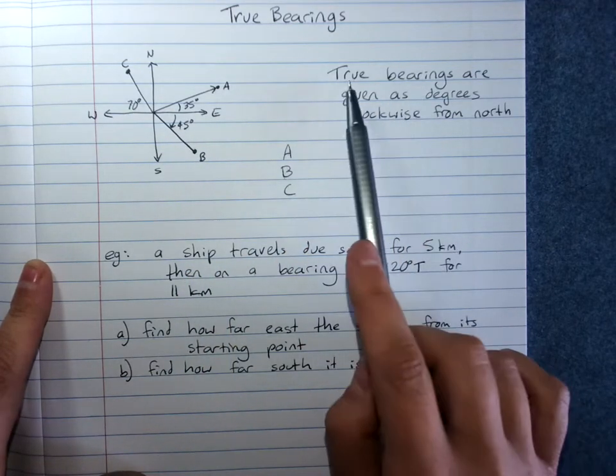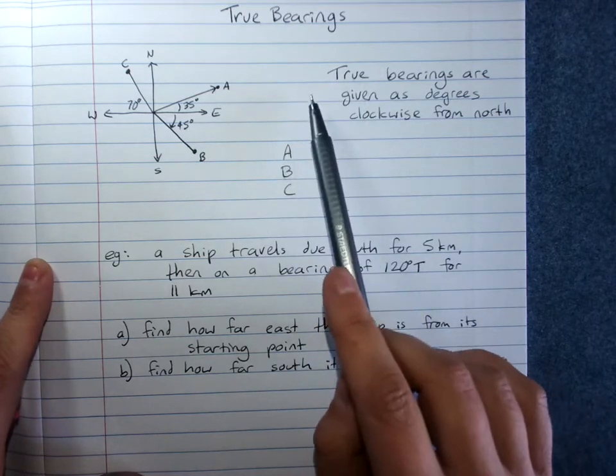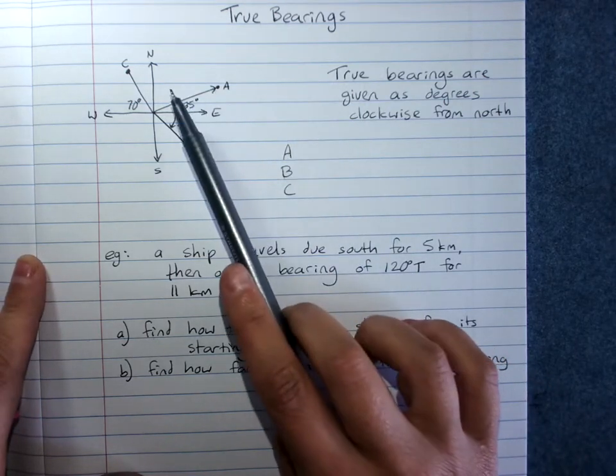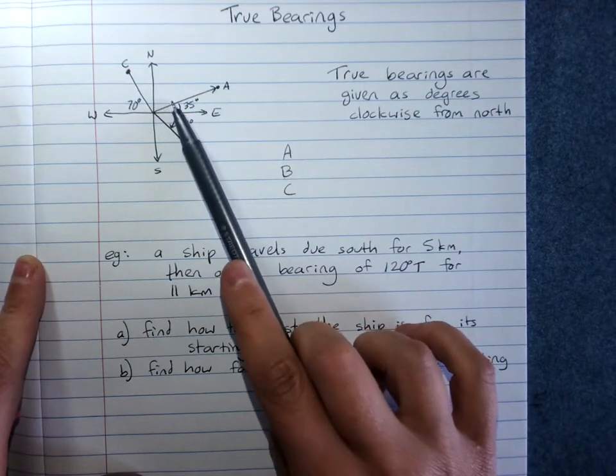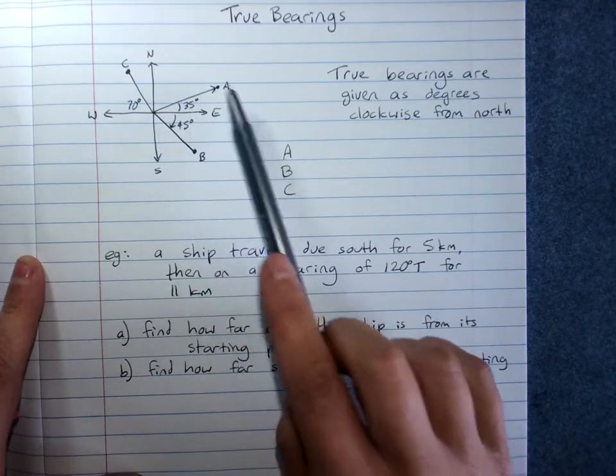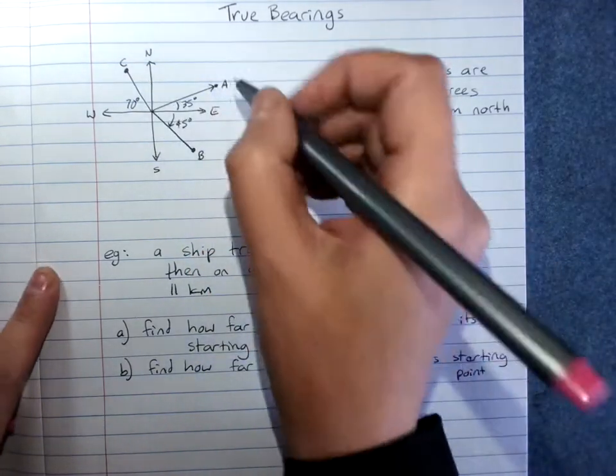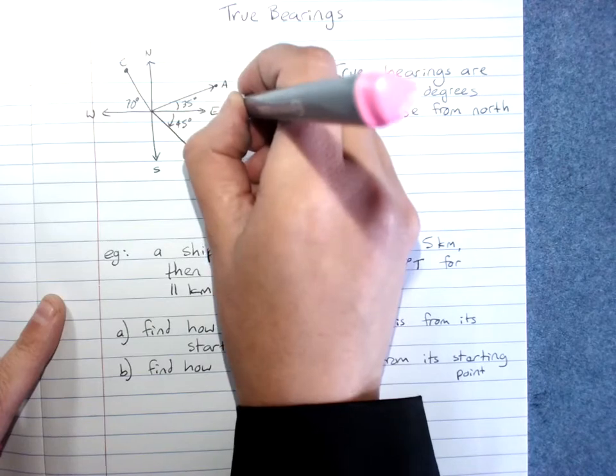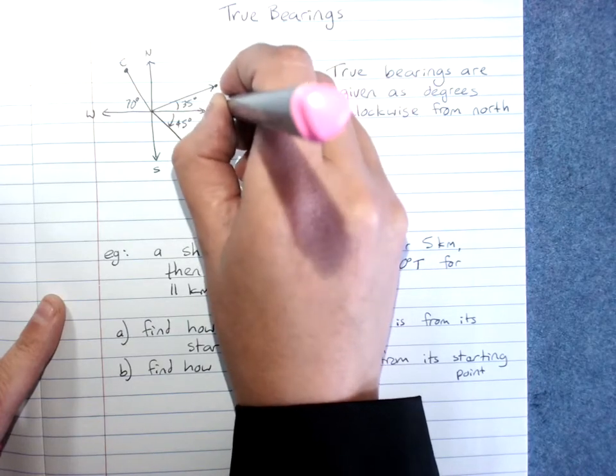One way of giving bearings is what's called a true bearing, which is just whatever the angle is clockwise around from north. So east would be 90 degrees T. That means true.